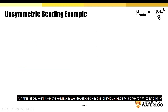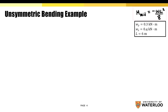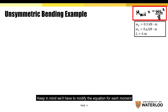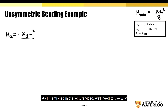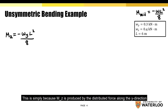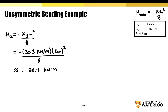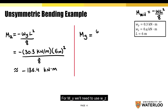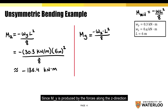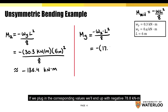On this slide we'll use the equation developed on the previous page to solve for Mz and My. For Mz, we'll need to use Wy, since Mz is produced by the distributed force along the y direction. Plugging in the corresponding values, we end up with negative 136.4 kNm. For My, we'll use Wz, since My is produced by the forces along the z direction. Plugging in the corresponding values, we end up with negative 78.8 kNm.